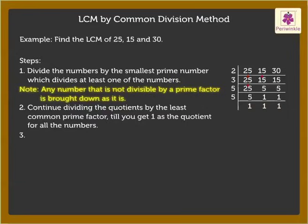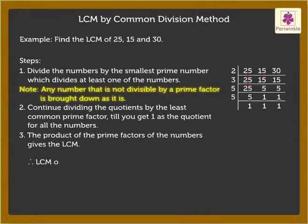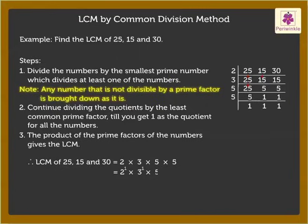Step 3: The product of the prime factors of all the numbers gives the L.C.M. Thus, L.C.M. is equal to 2 into 3 into 5 into 5, which is equal to 2 raised to the power of 1, into 3 raised to the power of 1, into 5 squared, which is equal to 150.